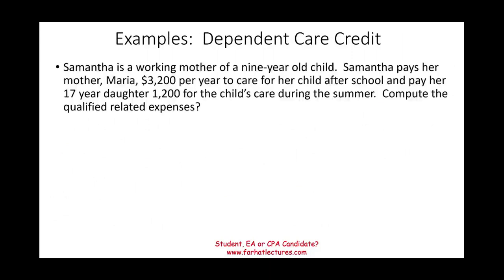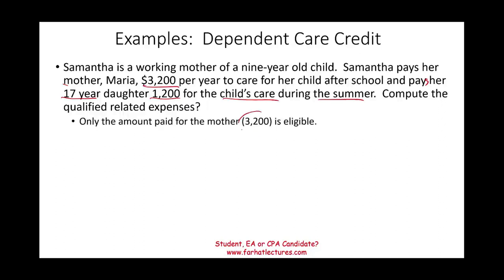Example one: Samantha is a working mother of a nine-year-old child. She pays her mother, Maria, $3,200 per year to care for the child after school, and also pays her 17-year-old daughter $1,200 to care for the child during summer. The qualified related expenses for Samantha are $3,200. The payment to her daughter is not eligible because the daughter is under age 19. Also note that the maximum for one child is $3,000, so the $3,200 would be capped at $3,000.